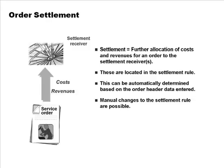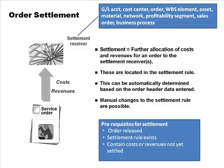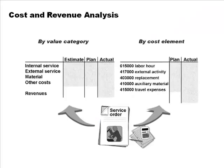Settlement of the service order distributes the costs it has incurred. The three requirements for settlement are: the order must be released, there must be a settlement rule, and it must have unsettled costs or revenues. The settlement receiver can be many different types of objects. Costs can be viewed by cost element or by value categories. This completes the process of enterprise asset management and customer service.